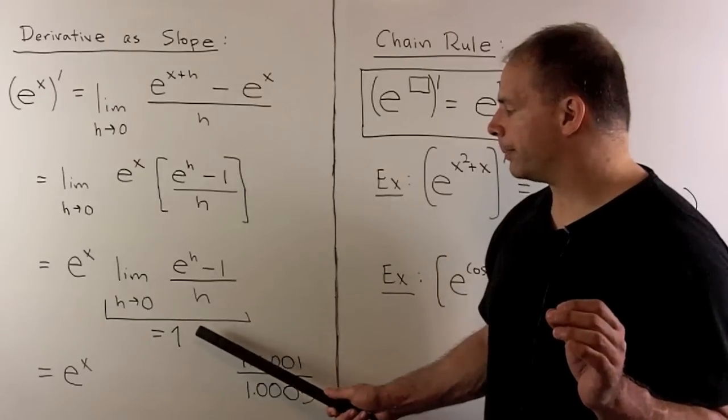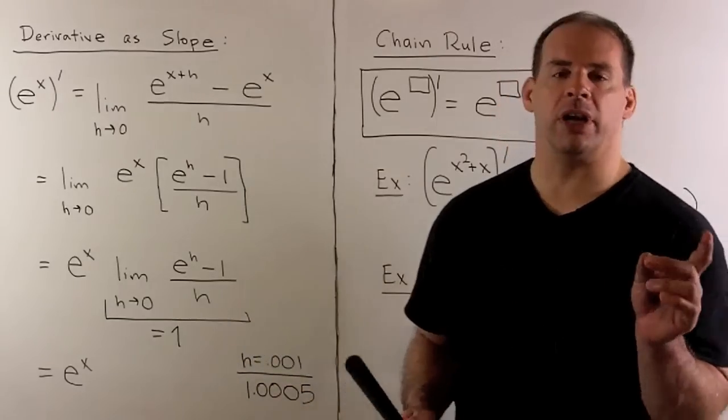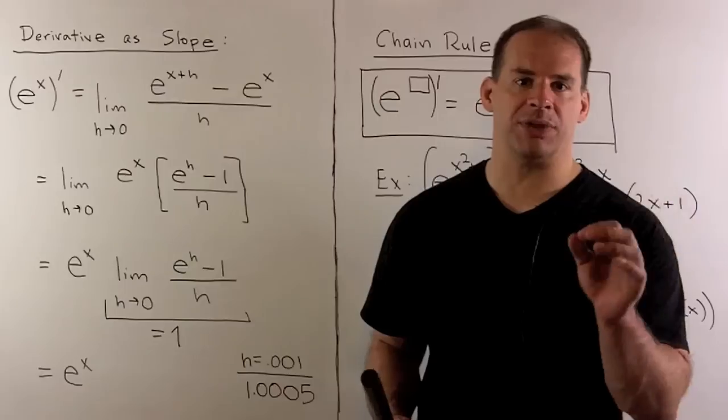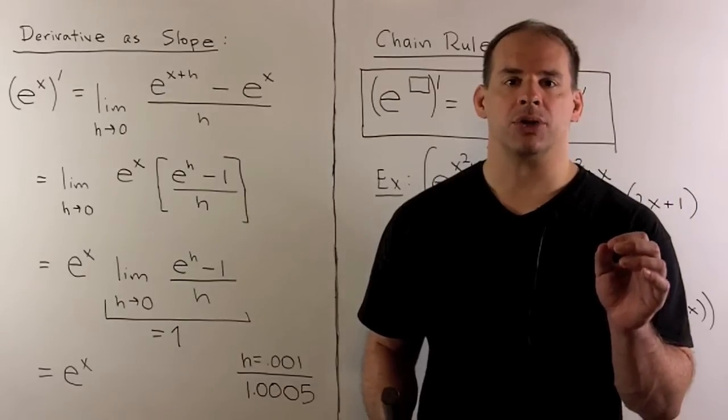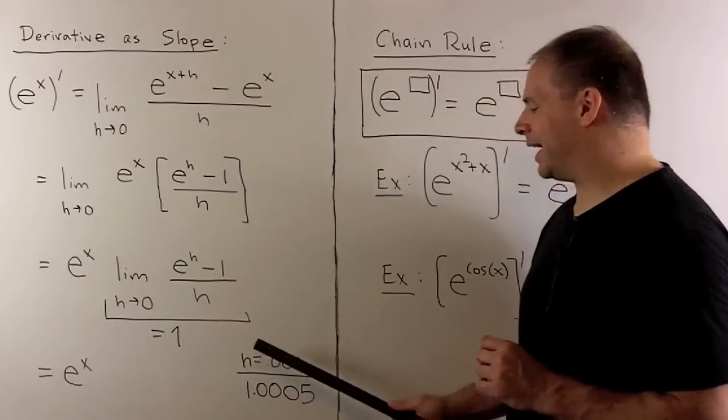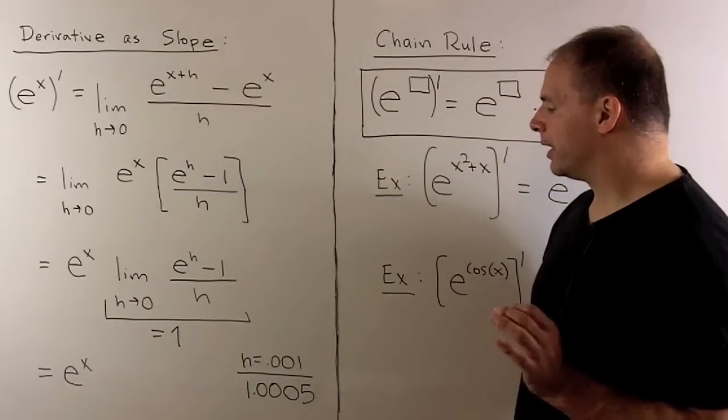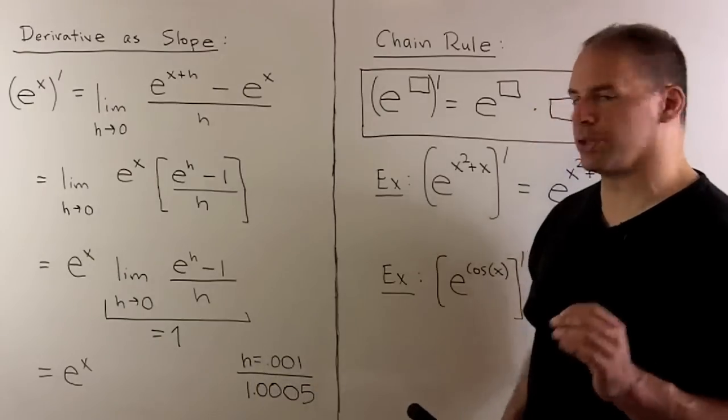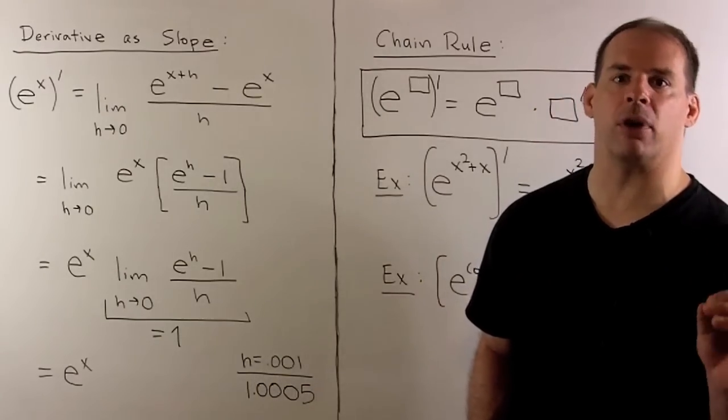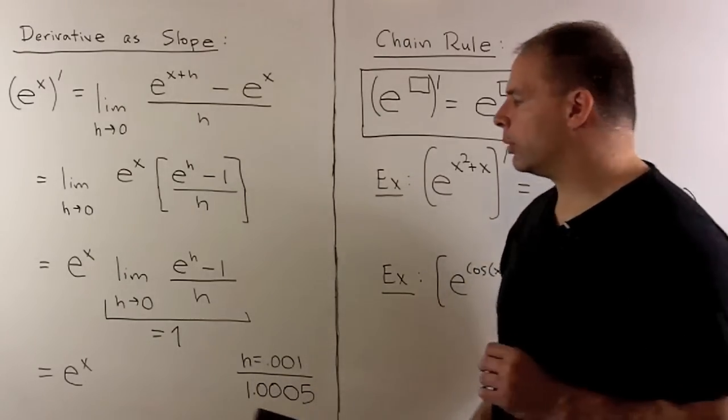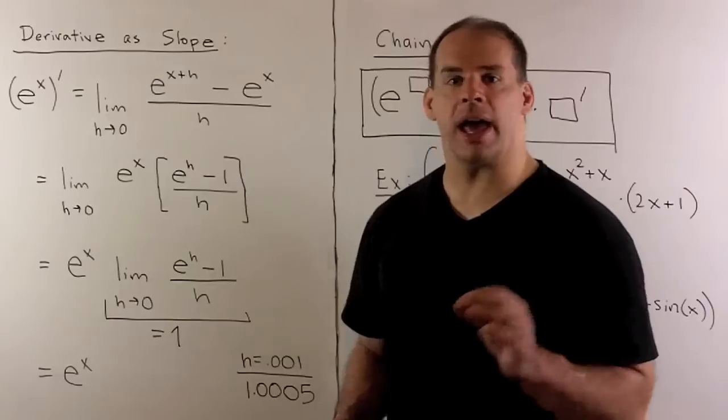That's going to go to 1. Now, for here, we'll just check a small number, see if it's in the ballpark. So, if I take my calculator, I'll put an h equal to 0.001. Out comes 1.0005, and that's good enough for us. So, out we get e to the x as promised.